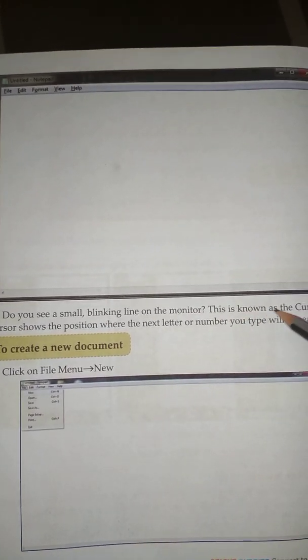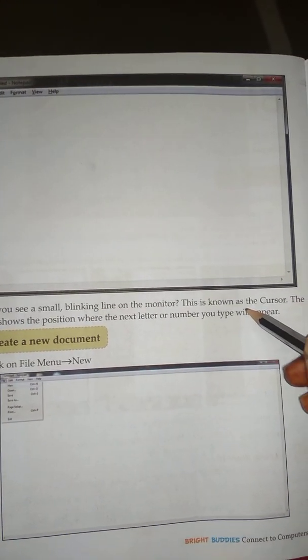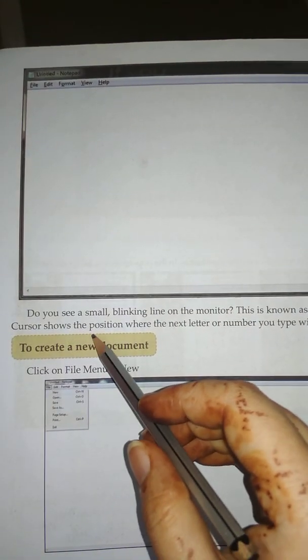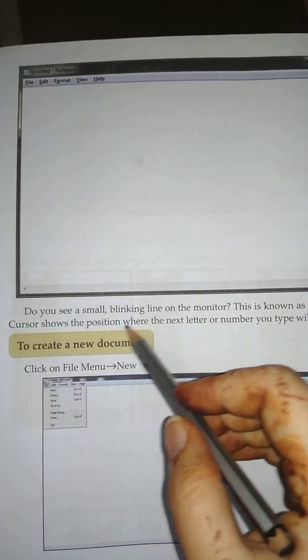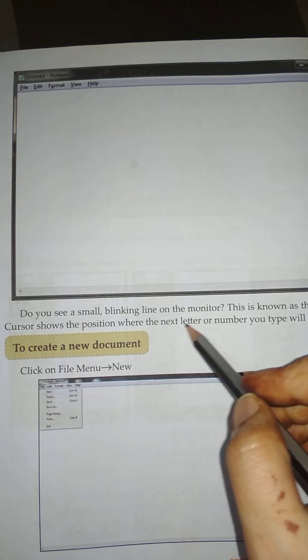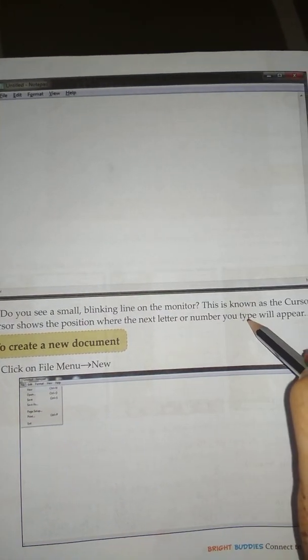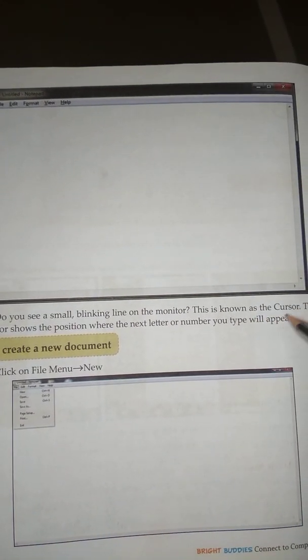This is known as the cursor. The cursor shows the position where the next letter or number you type will appear.